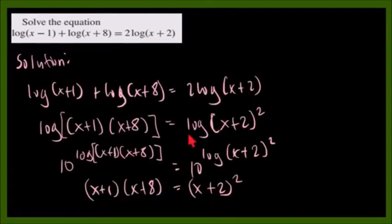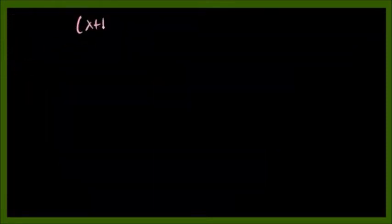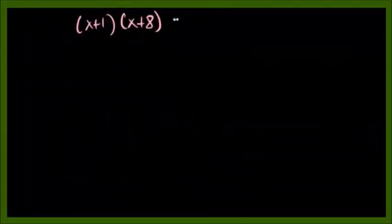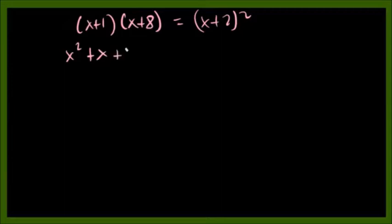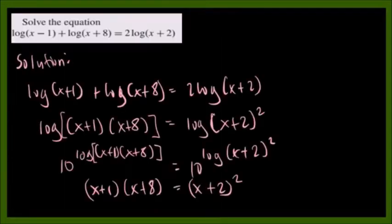Now we solve for x. We have (x plus 1)(x plus 8) equals (x plus 2) squared. Multiplying the two binomials on the left: x squared, then x times 8 gives 8x, then 1 times x gives x. We need to be careful with signs — a missed sign will give a different answer.